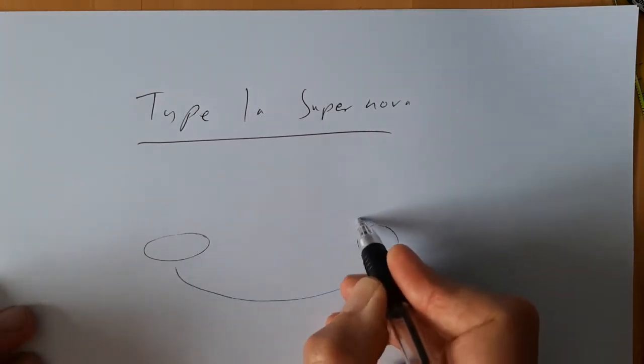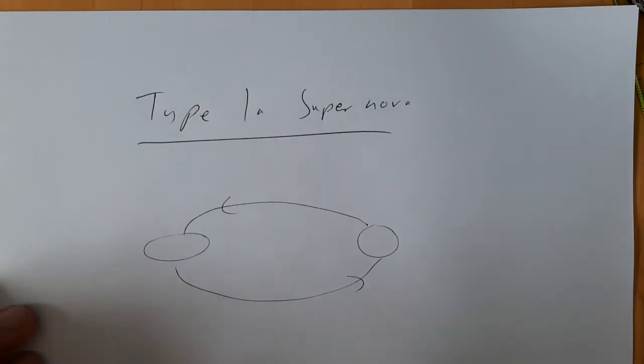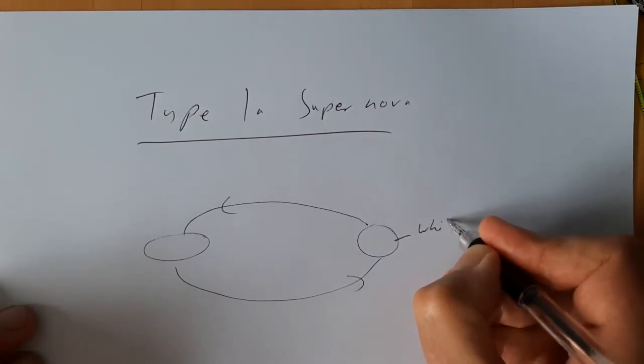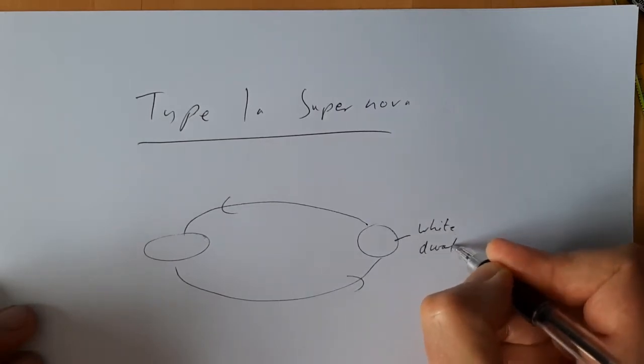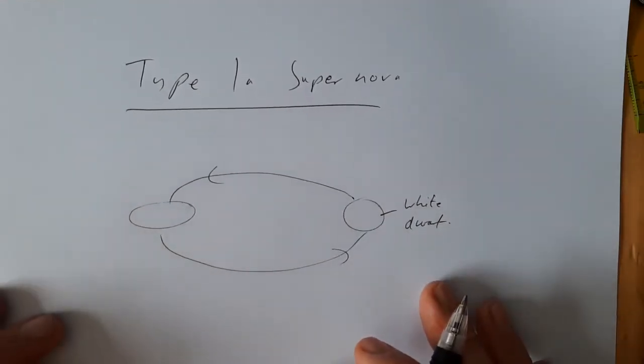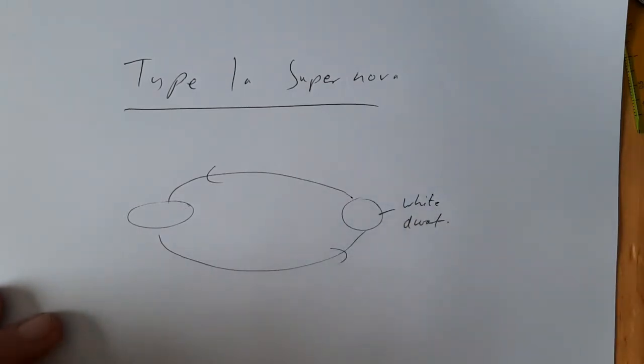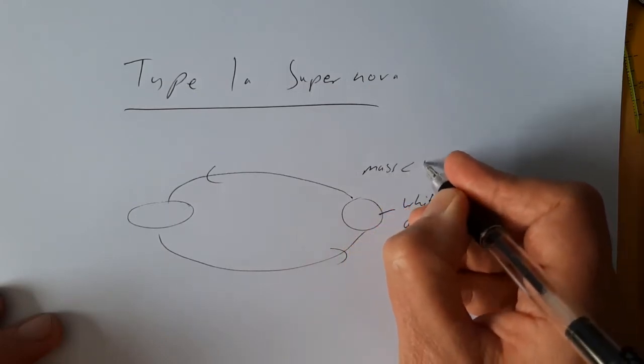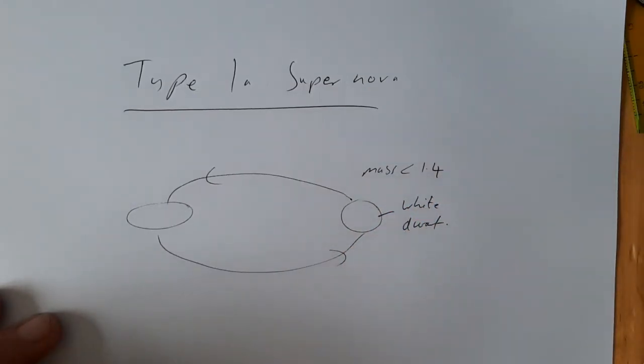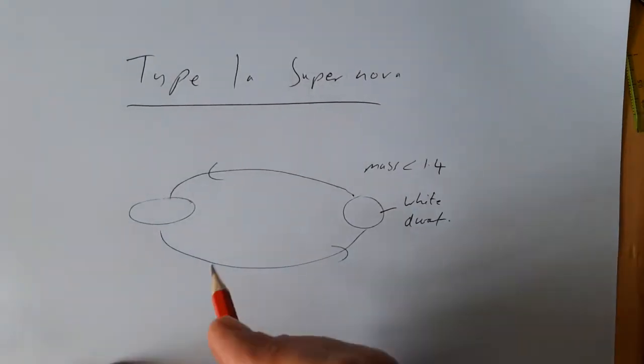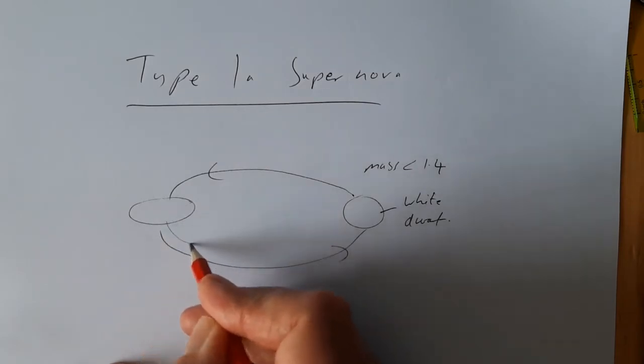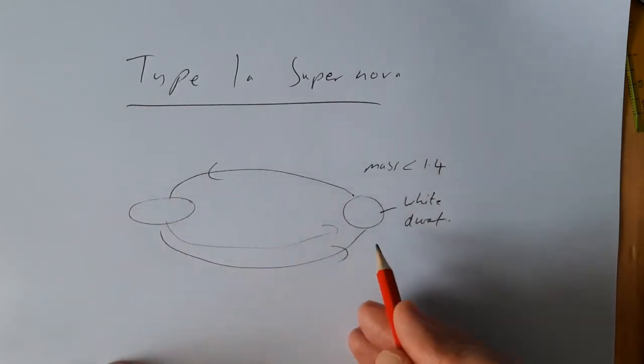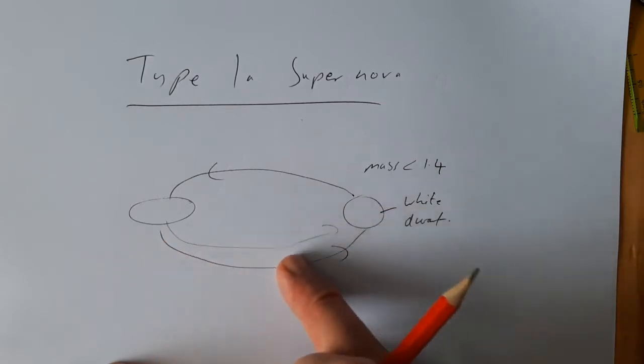This is our model for what's happening with the type 1a supernova. We imagine a binary star system, so we talked about that in relation to Doppler. We've got these two objects going around each other and we're imagining that one is a white dwarf, so in other words it's a smaller star that's exploded leaving just the core behind and that has got a mass of less than 1.4 solar masses but not massively less.